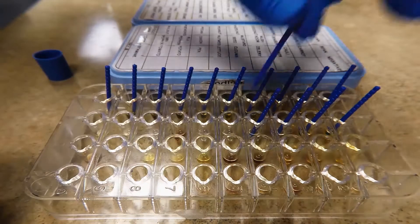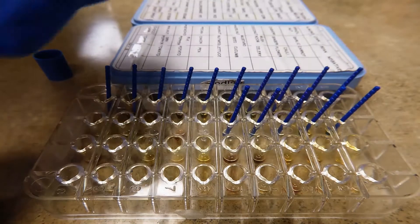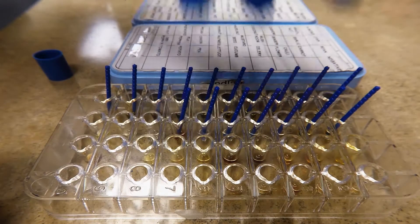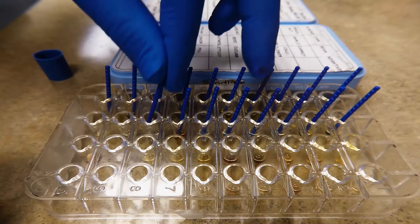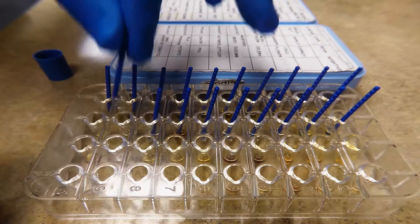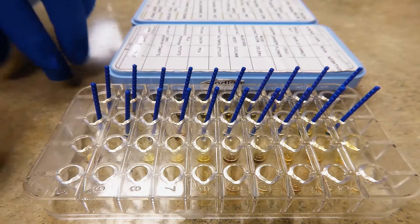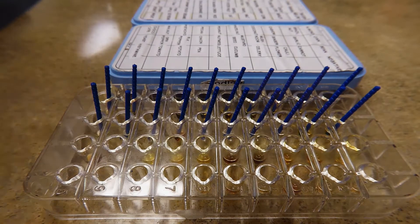The initial type of skin test is called a scratch test, in which a small plastic but pointed device is used to apply a small amount of allergen to the skin. In our practice, we apply it to the forearms, except in very small children, in which we apply it to the back.